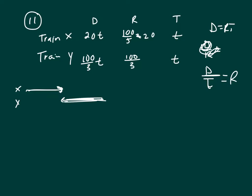We know that if you take this distance plus this distance, what does it have to give you? It has to give you 100. So let's take 20T, the distance for train X, plus 100 over 3 T. That's going to be 100.